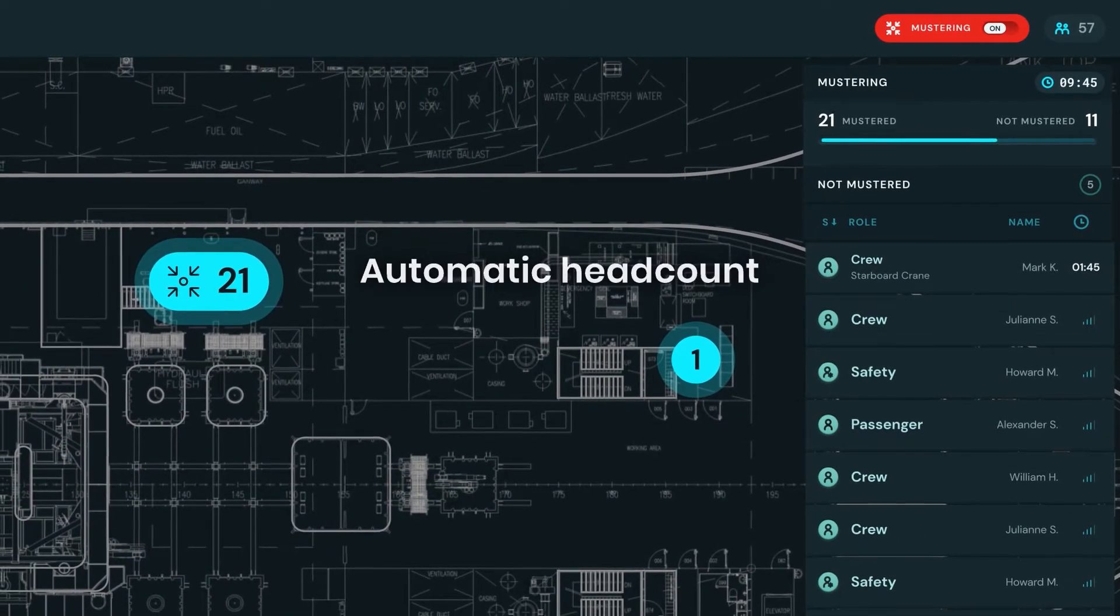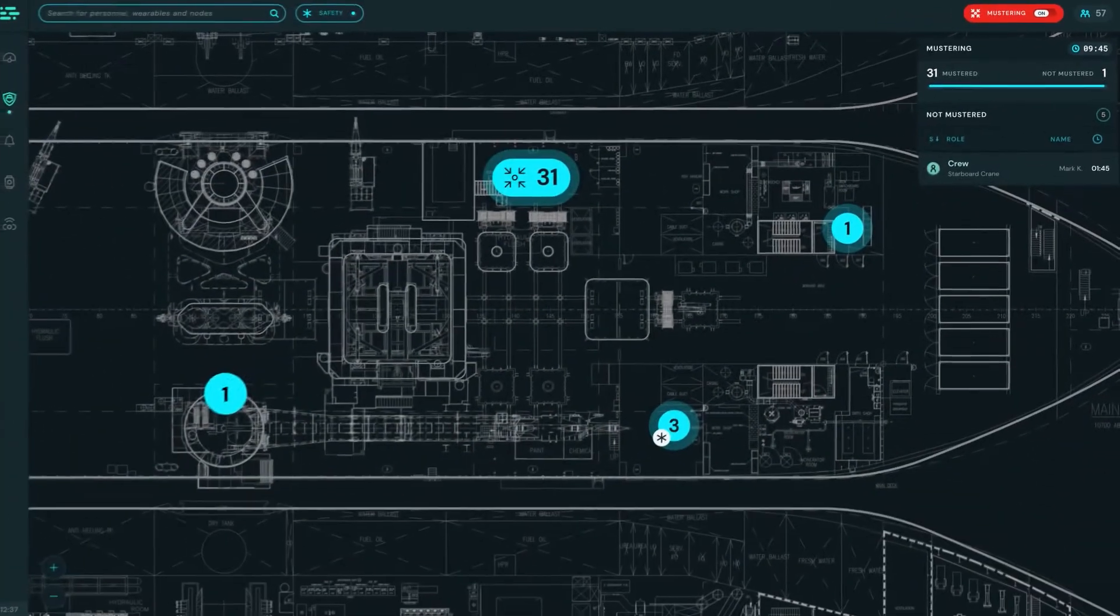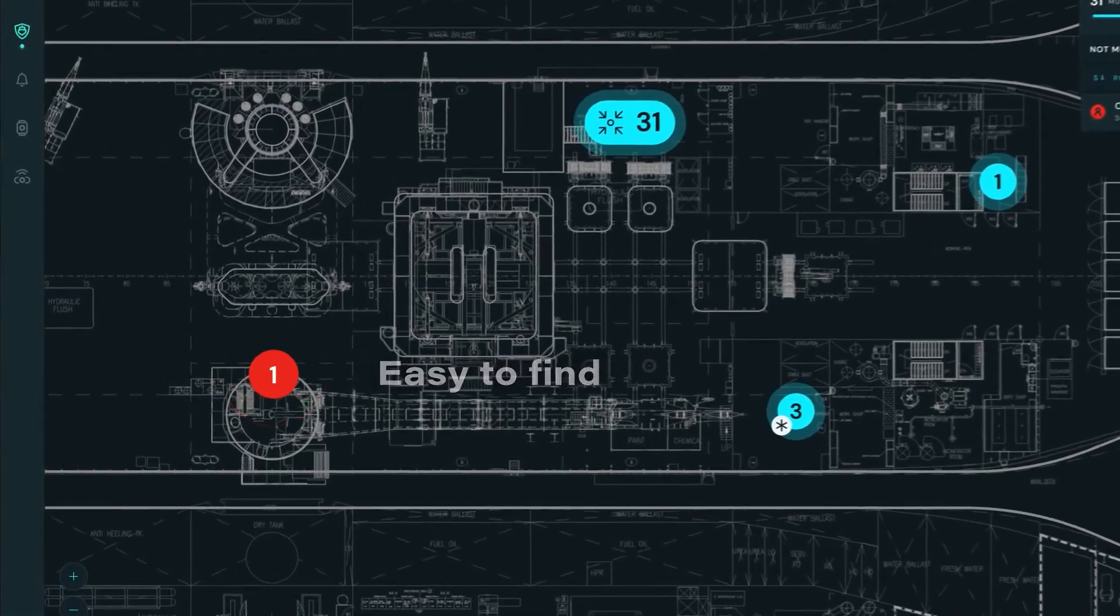Connect POB provides an automatic count of people at the muster stations. People missing are easy to find, allowing an immediate high precision response by search and rescue.